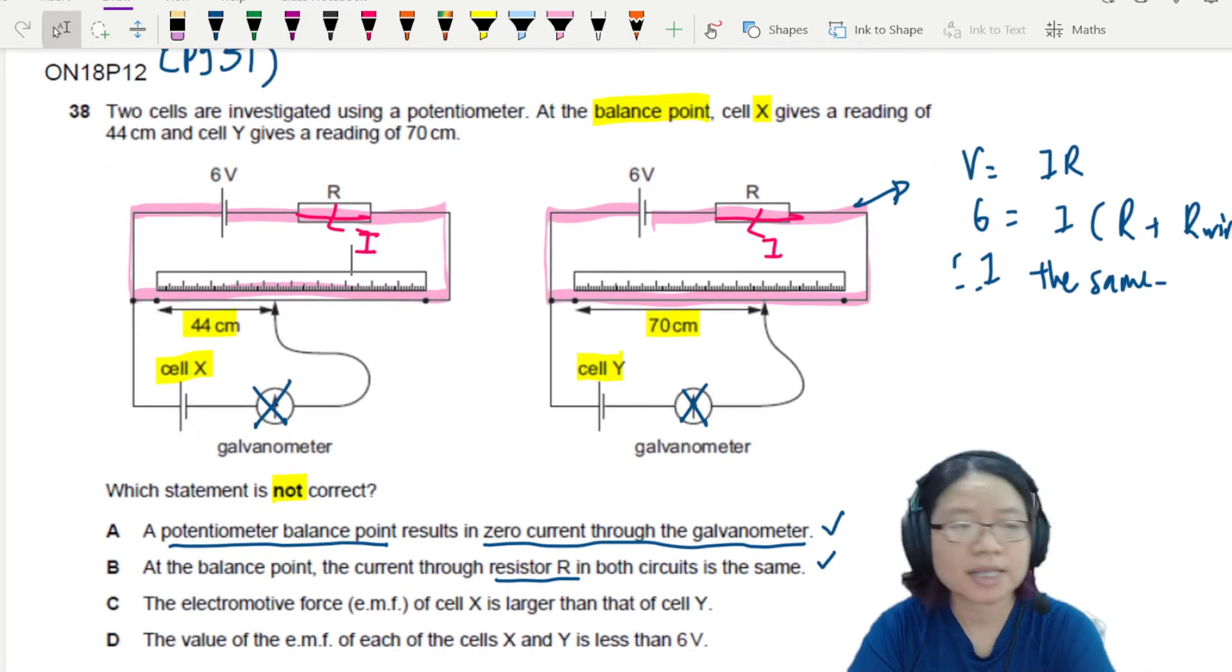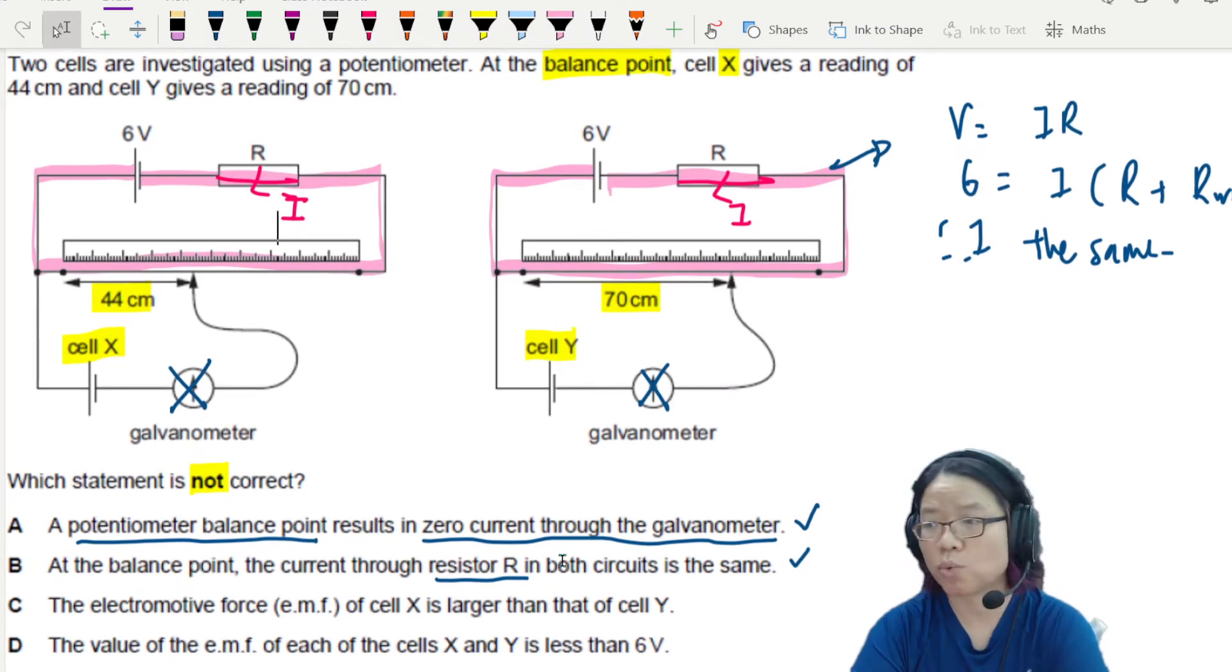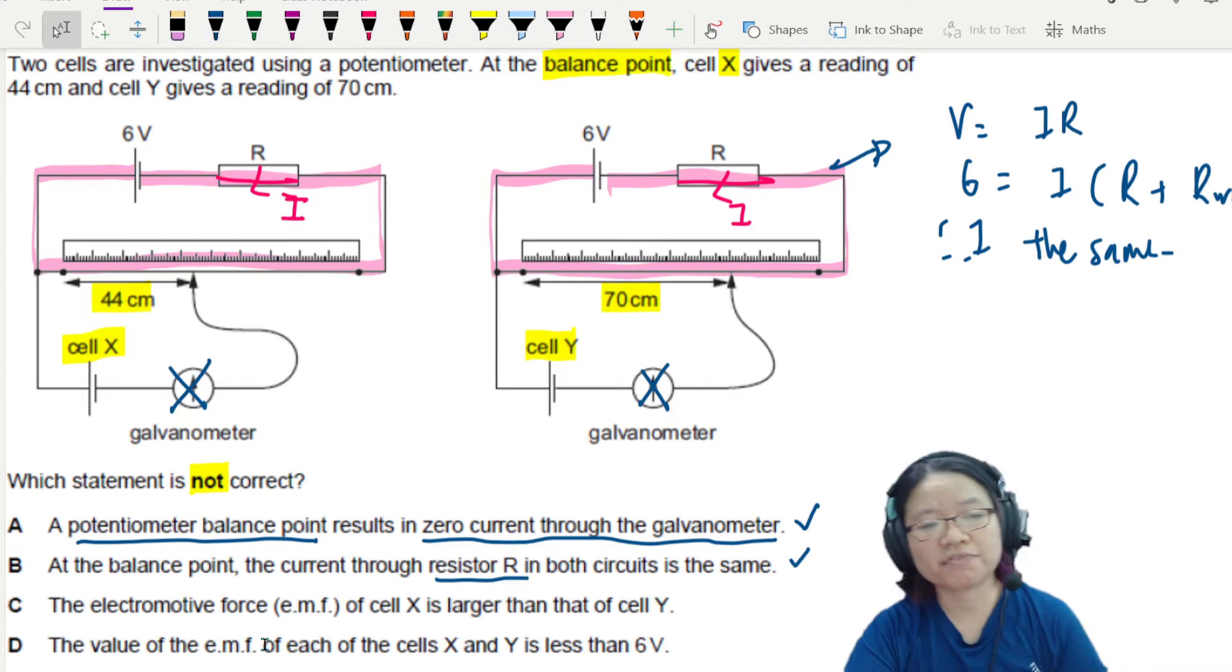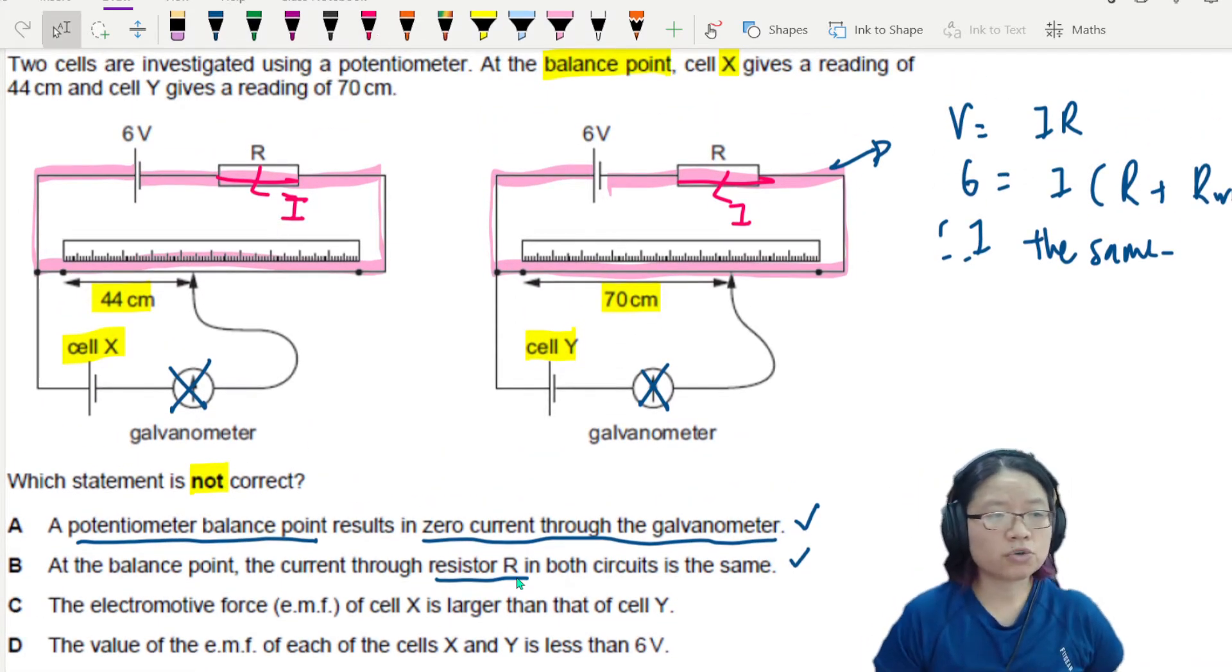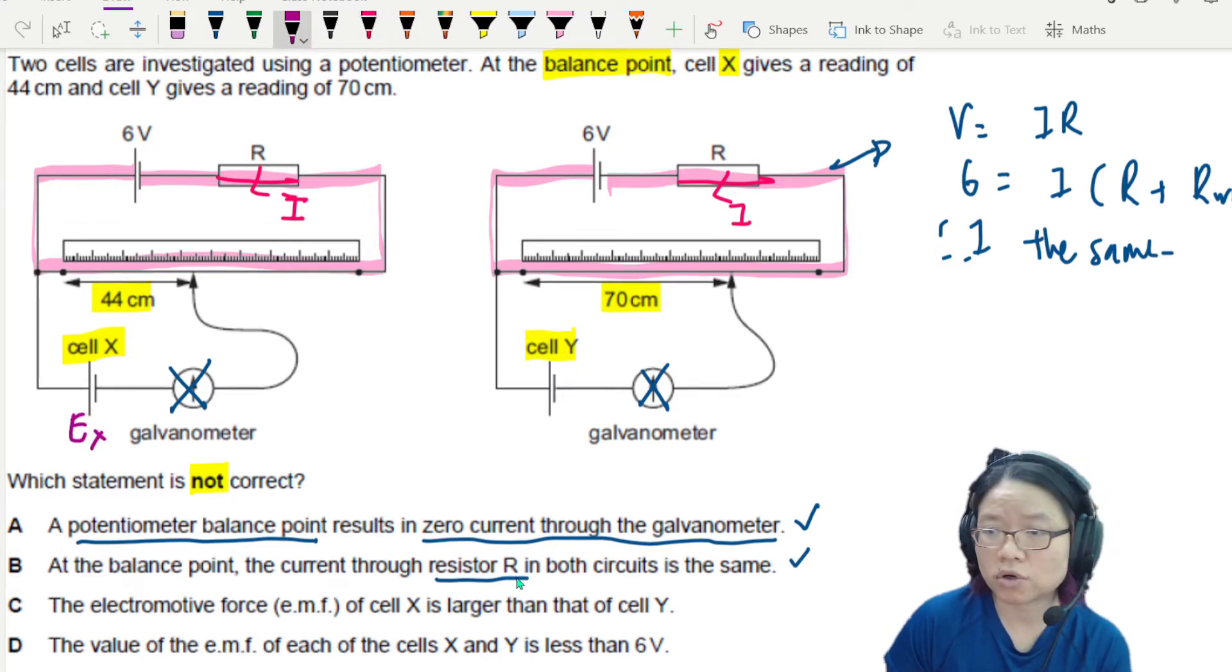C. The EMF of cell X is larger than EMF of cell Y. Or D, the value of EMF of each cell X and Y is less than 6V. So let's consider C first. To find the EMF of the cell, let's say I call this EX. And maybe I'll call this EY.